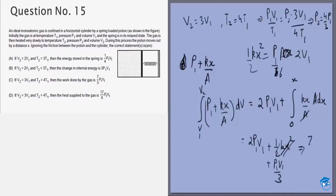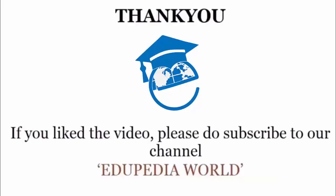So the answer is 7P1V1 by 3, which is option C. Now to see option D, the heat supplied will be 7P1V1 by 3, that is the work done plus the change in internal energy. That will be 3 by 2 NR T2 minus T1, that is 3T1 or 9P1V1 by 2. We can see that this is not equal to 17P1V1 by 6, which is option D. So my correct answers in this question would be A, B and C. Thank you.